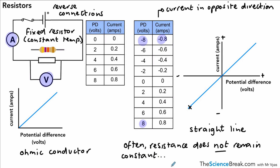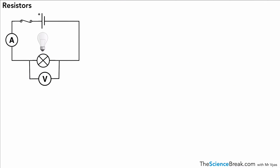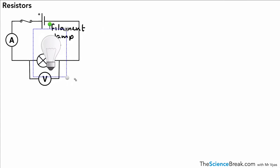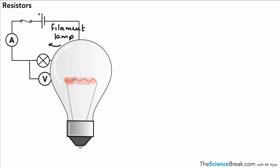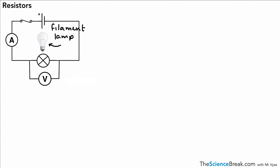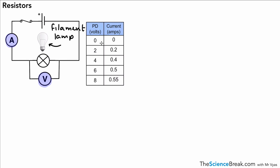Resistance does not always remain the same for a component. The next component we're going to look at is a filament lamp. The circuit is set up in a very similar way to before, but instead of a fixed resistor we have a filament lamp. The way it works is that current passes through it, the filament glows very hot, and gives out light. Because we're dealing with a change in temperature as well as a change in potential difference, we'll see a slightly different shaped curve.